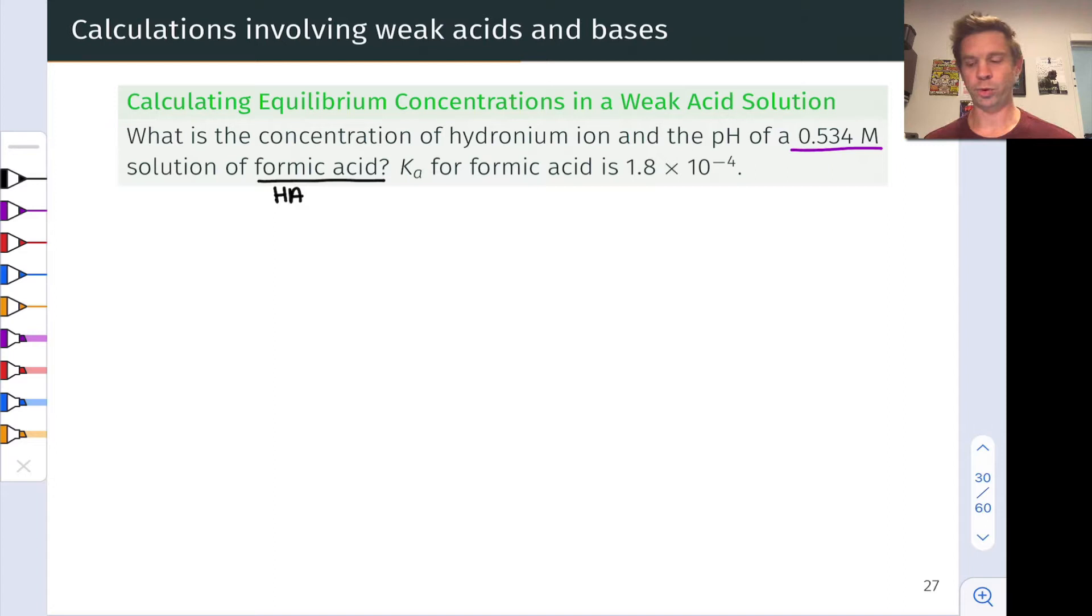In this problem we have a 0.534 molar solution of formic acid. Let's call formic acid HA to simplify our lives. It's a generic weak acid with a given Ka value of 1.8 times 10 to the negative 4.